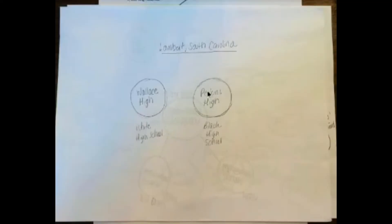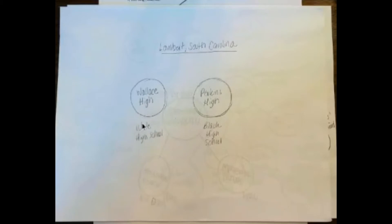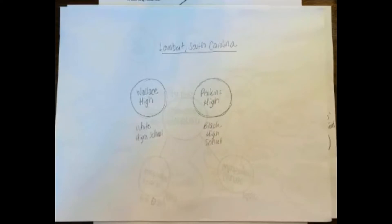What you're looking at on your screen is a reminder about our historical settings. We are in the 1950s and 60s in Lambert, South Carolina, and there are two main high schools in this section. The first is Wallace High School, which is the white high school. And then we have Perkins High School, which is the Black high school. These two high schools are really important because this is where we get into the tennis match — the secret nighttime tennis match that is kind of the climax of our whole story.